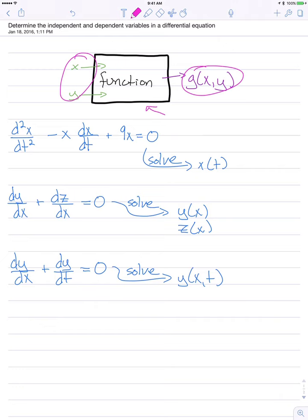Independent variables mean the input, and the thing you get out, the g, that's the dependent variable because it depends on x and y.